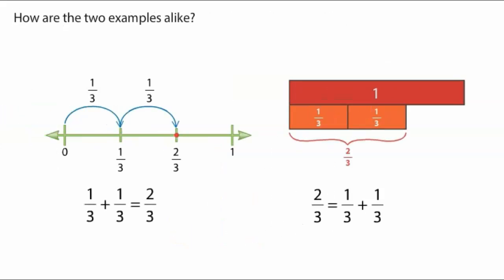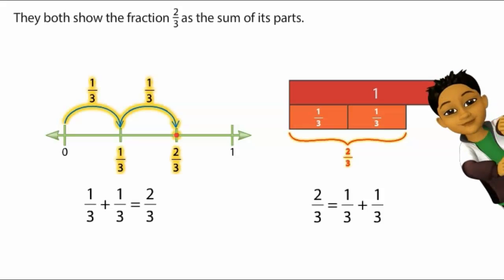How are the two examples alike? They both show the fraction two-thirds as the sum of its parts.